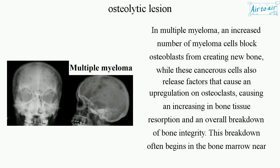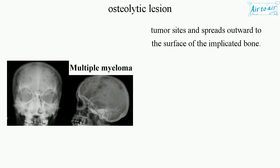In multiple myeloma, an increased number of myeloma cells block osteoblasts from creating new bone. While these cancerous cells also release factors that cause an upregulation of osteoclasts, causing an increase in bone tissue resorption and an overall breakdown of bone integrity. This breakdown often begins in the bone marrow near tumor sites and spreads outward to the surface of the implicated bone.